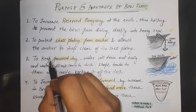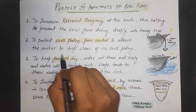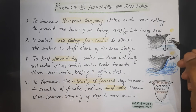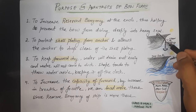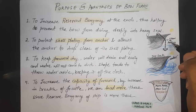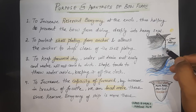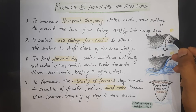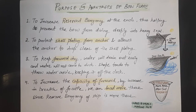The second advantage is to protect the shell plating from the anchor and allowing the anchor to drop clear of the shell plating. This is the chafing ring and this is the anchor, mounted here, and this is the flare of the ship. By providing the flare, the anchor is always kept free and clear from the shell plating, because the anchor is very heavy and can damage the shell plating. So while dropping the anchor, there will be a considerable gap between the shell plating and the anchor, and the shell plating will always be safe.